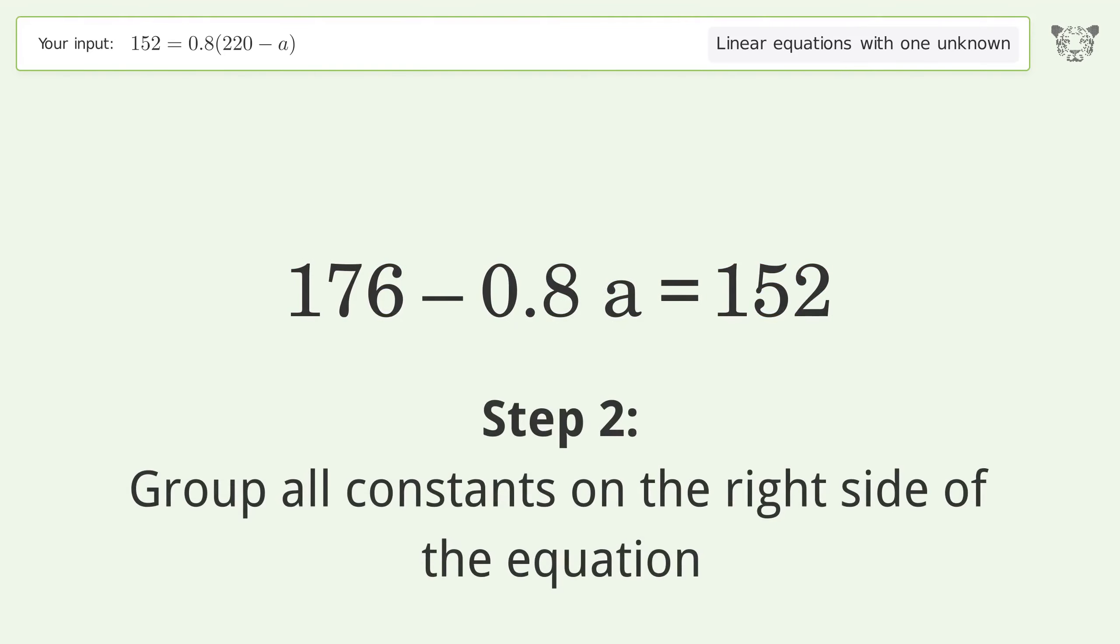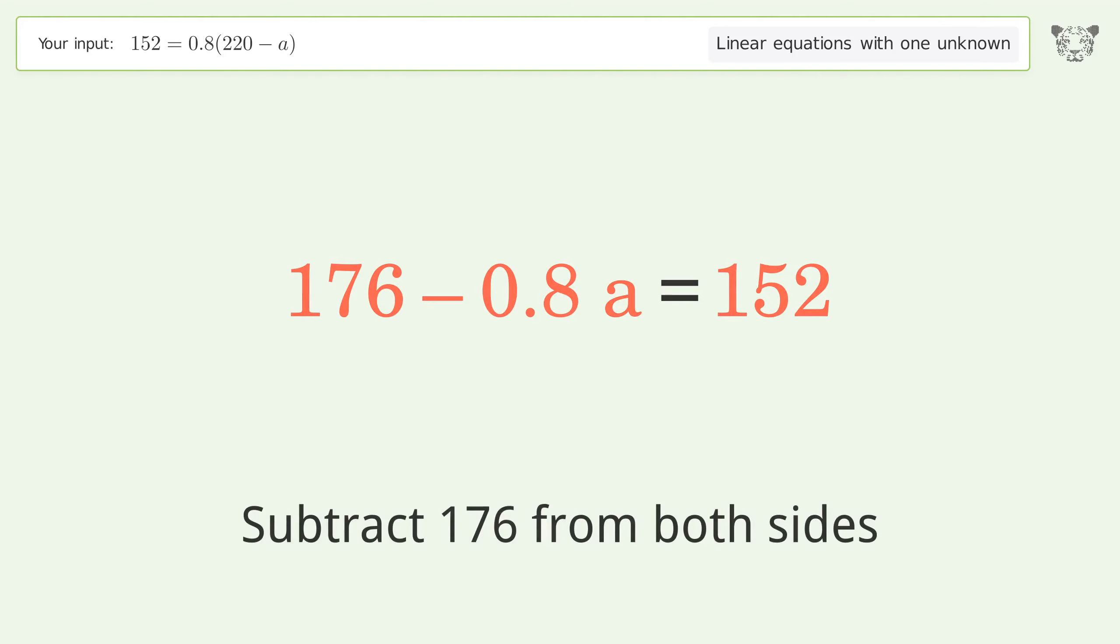Group all constants on the right side of the equation. Subtract 176 from both sides.